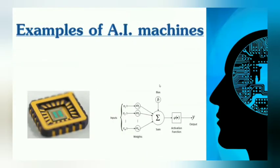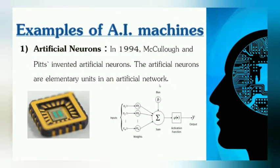Now, the examples of AI machines. First, artificial neurons. In 1994, McCulloch and Pitts invented artificial neurons. These neurons are an elementary unit of an artificial network, like in humans. It is basically a chip — the mathematical equation for the chip to work.